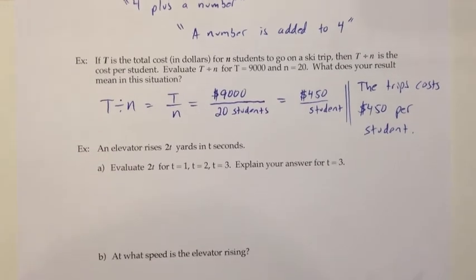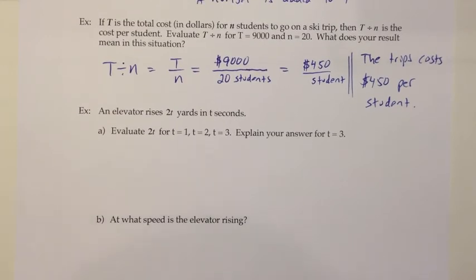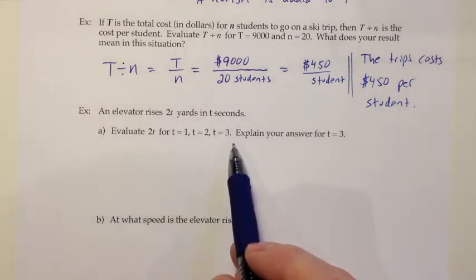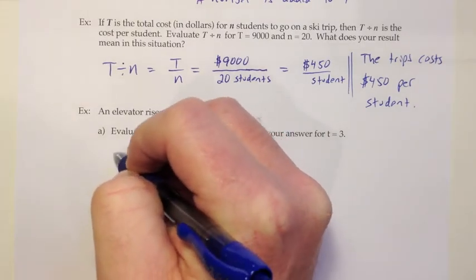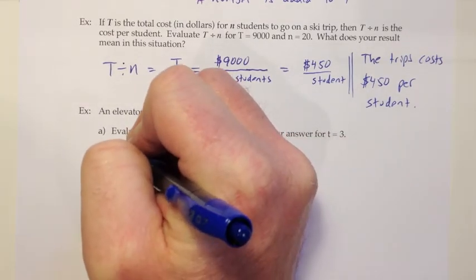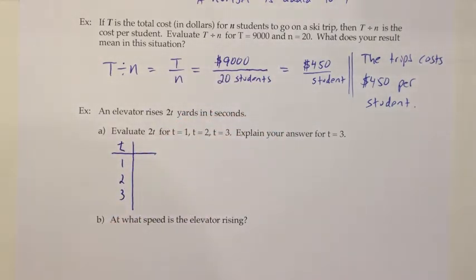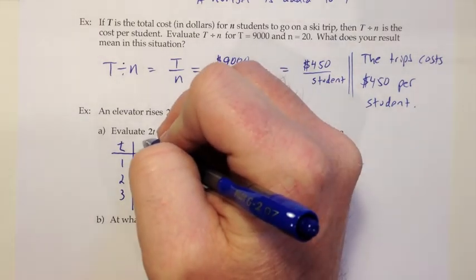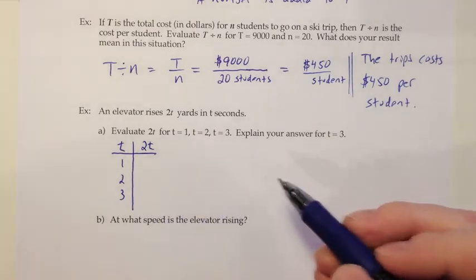Let's look at one more application. An elevator rises 2t yards in t seconds. They want us to evaluate 2t for t equals 1, t equals 2, and t equals 3. Since they want us to evaluate this multiple times, I think it might be nice to make a little table here. On the left side, I'll list the values of t that they're interested in, which would be 1, 2, and 3. And then on the other side, I'll put the expression that I'm trying to evaluate, which is 2t. Then I'll show the work on the side and fill it into the table.